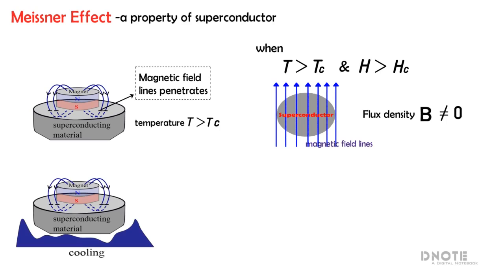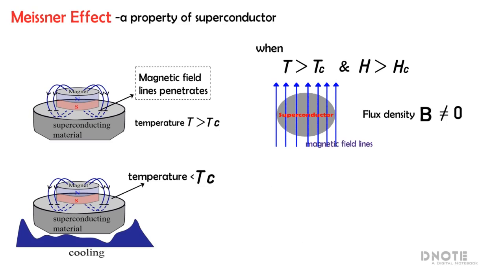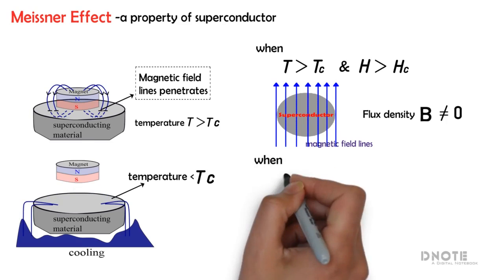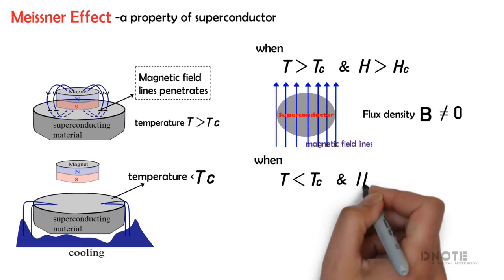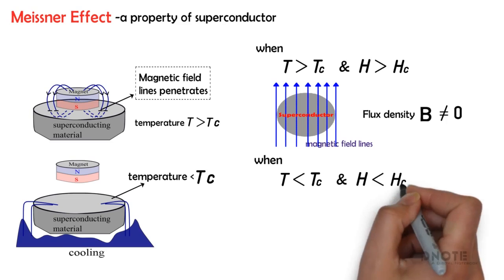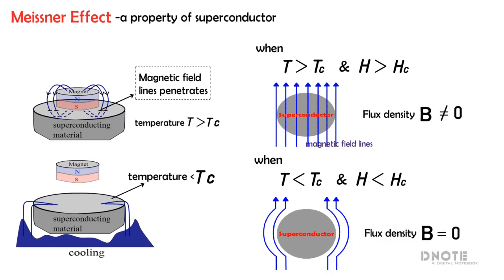Now, when we cool the superconducting material and its temperature drops below the critical temperature, the magnetic field lines do not penetrate it. Instead, they get expelled out of the material and the magnet starts to levitate. That is, when the temperature is less than the critical temperature and the field is less than the critical magnetic field, the magnetic field lines are expelled out and levitation of the magnet occurs. Here, the flux density B is equal to zero.